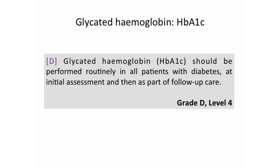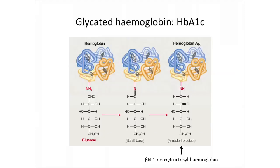A brief recap of the molecule itself: HbA1c is a sub-fraction of the hemoglobin molecule. It involves glycation at the end terminal of the amino acid at the beta chain of the hemoglobin, and the biochemical name is beta-N1-deoxyfructose hemoglobin. This is the specific moiety we want to measure in the lab — very specifically HbA1c, not other sub-fractions.